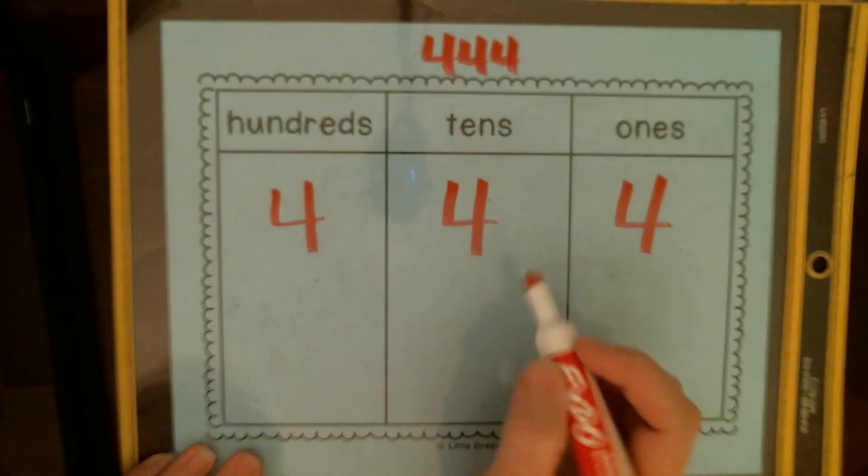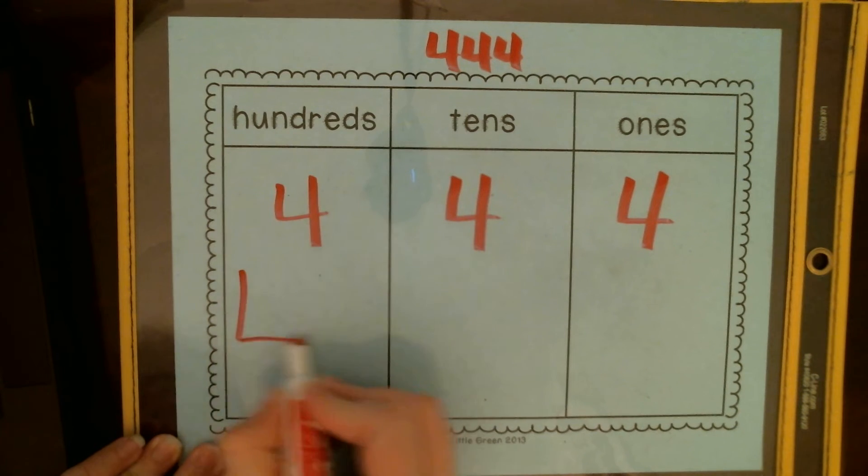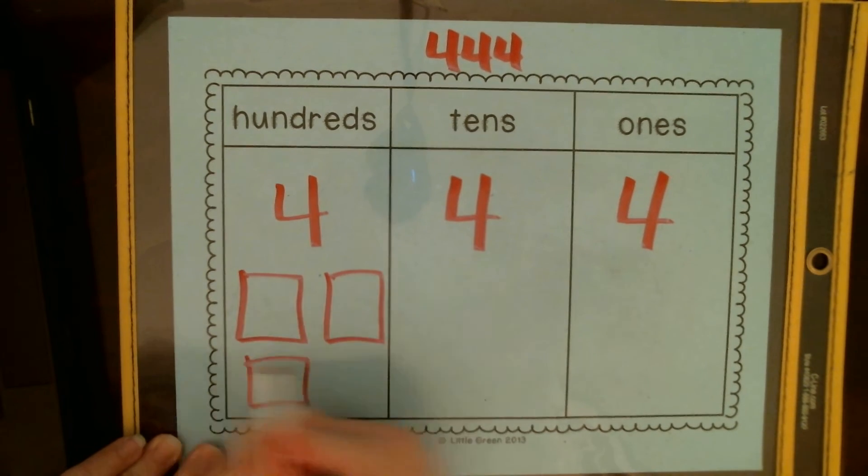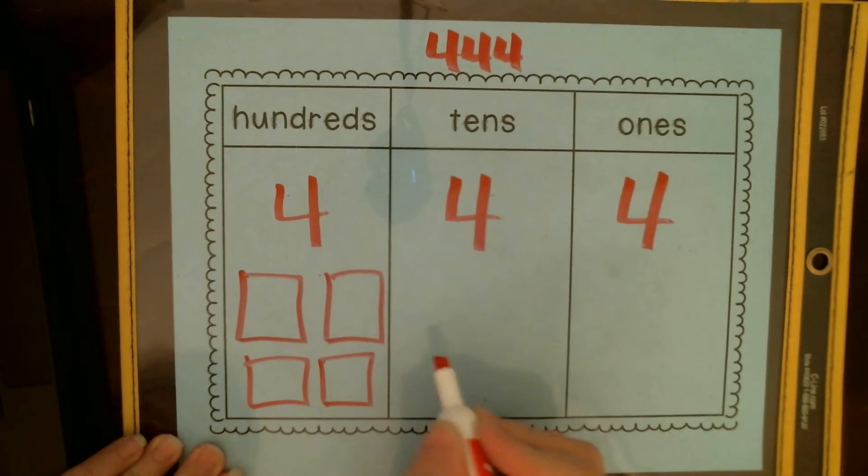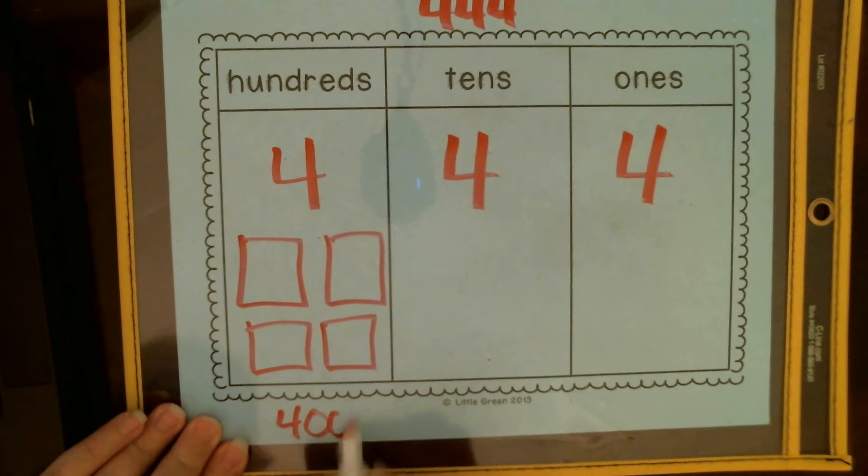444, they each have a different value. This is in the hundreds place, so we would picture it as four of those hundreds, and that four is worth 400. That's the value of it.